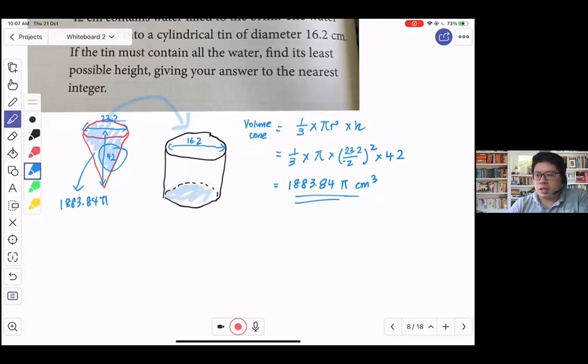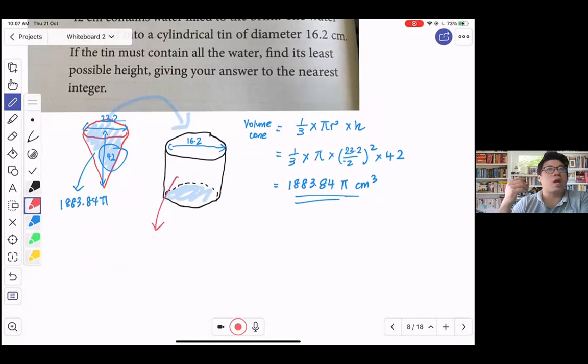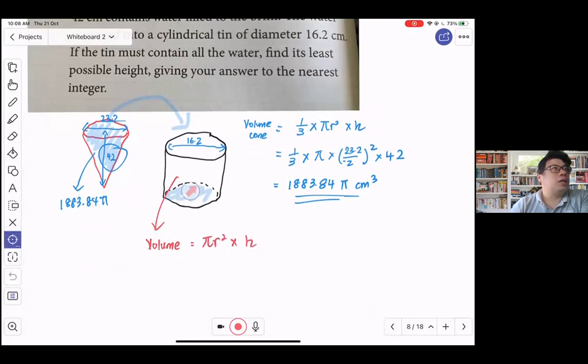So when I pour it into the tin, it's going to be occupying a certain height. Now here we are looking at the tin. The tin is a cylinder. We know that if we are going to calculate the volume in the tin, the volume basically would be π r² multiplied by height. So take note, the radius here represents the volume of the tin here, not the volume of the cone. Sorry, volume of the cylinder here.